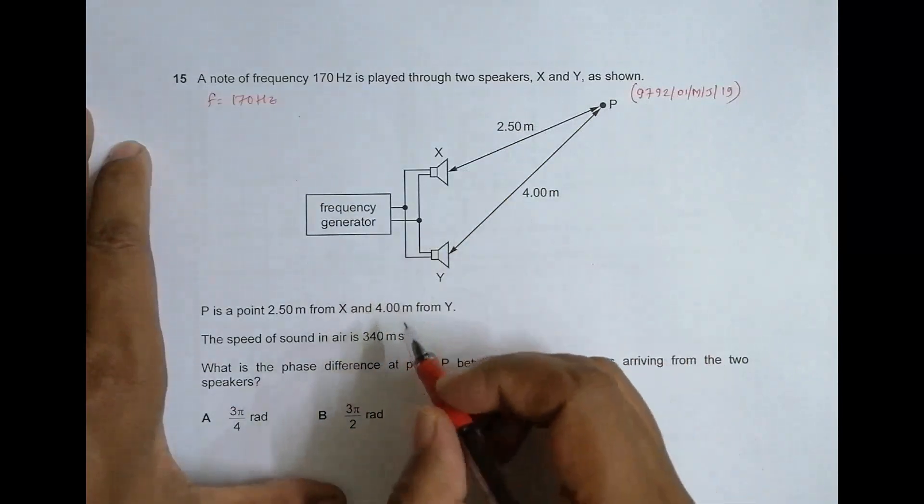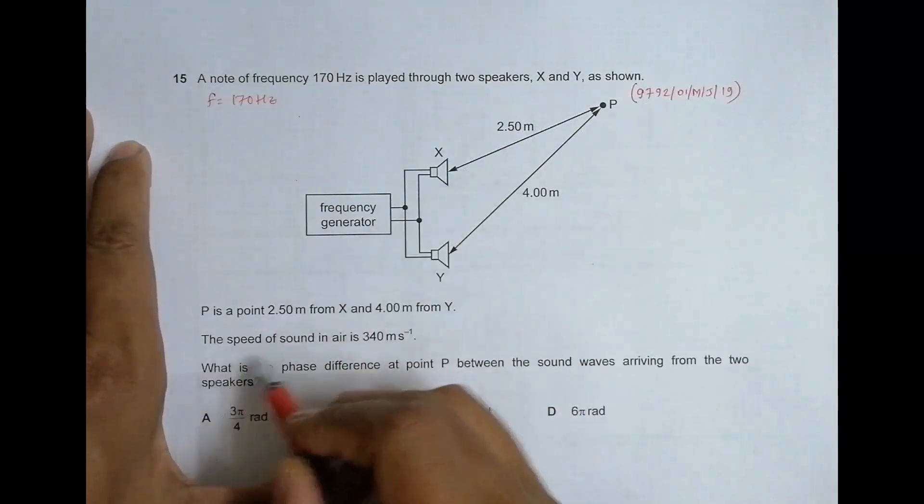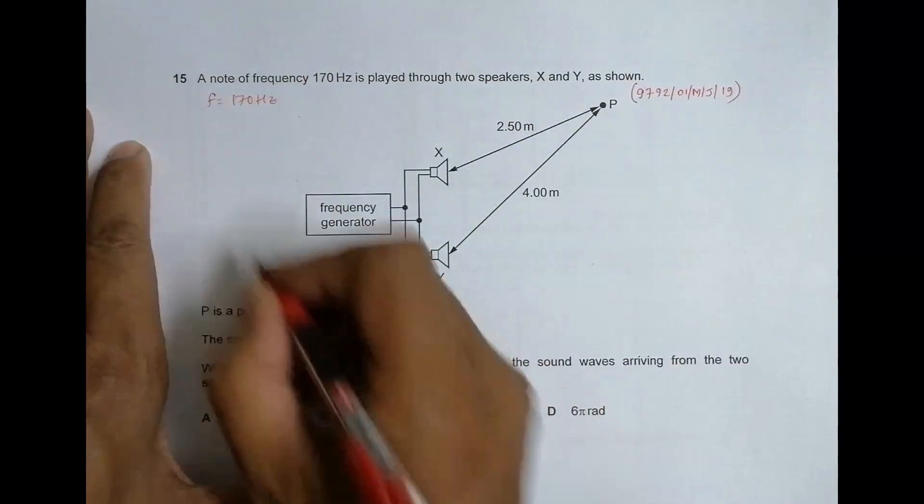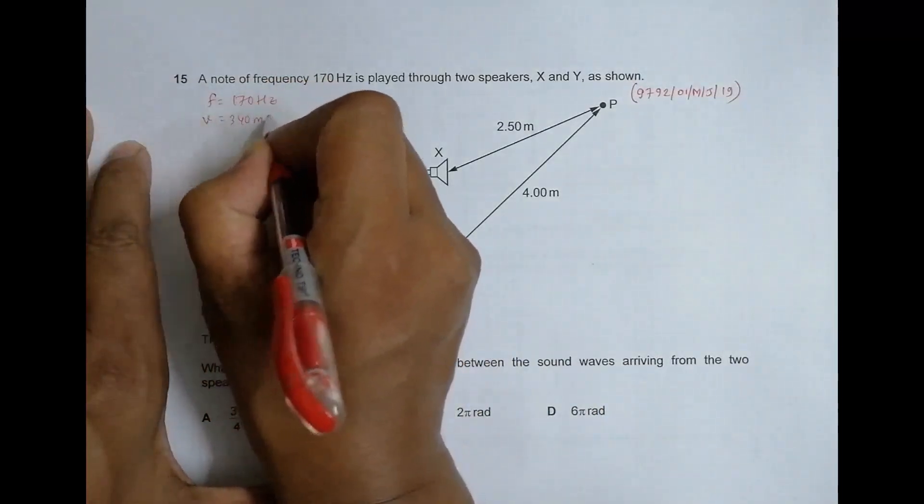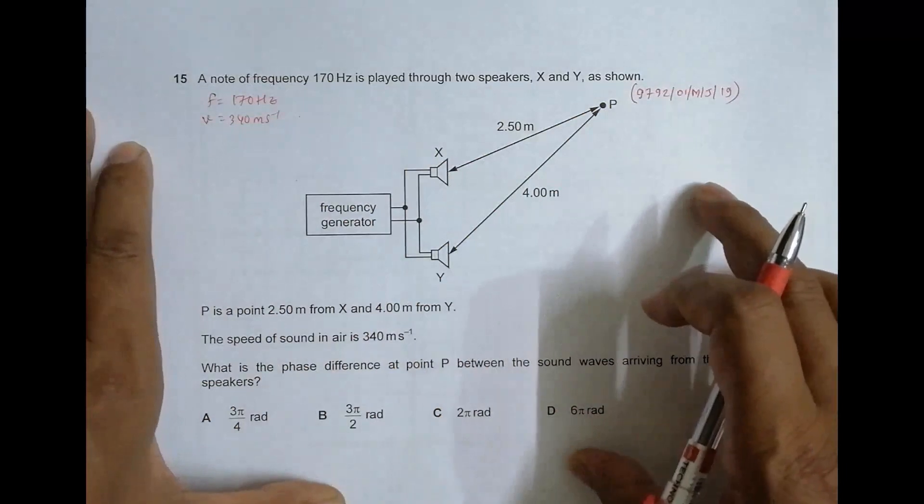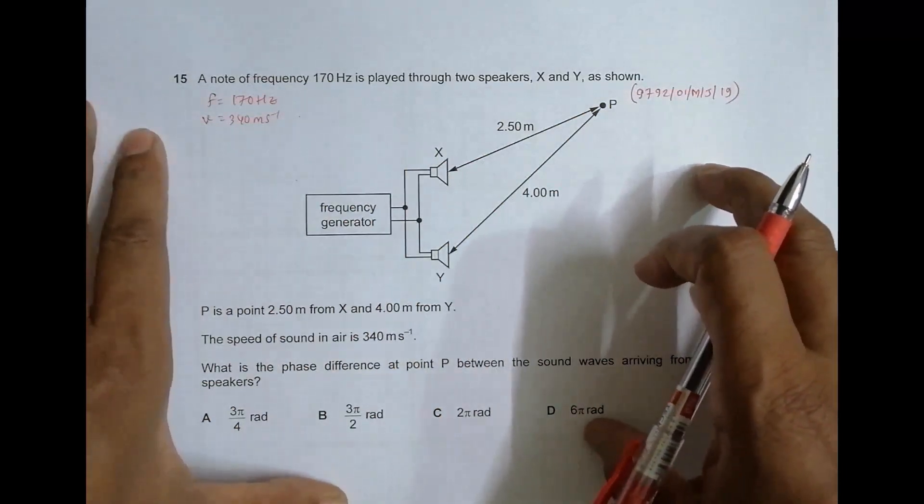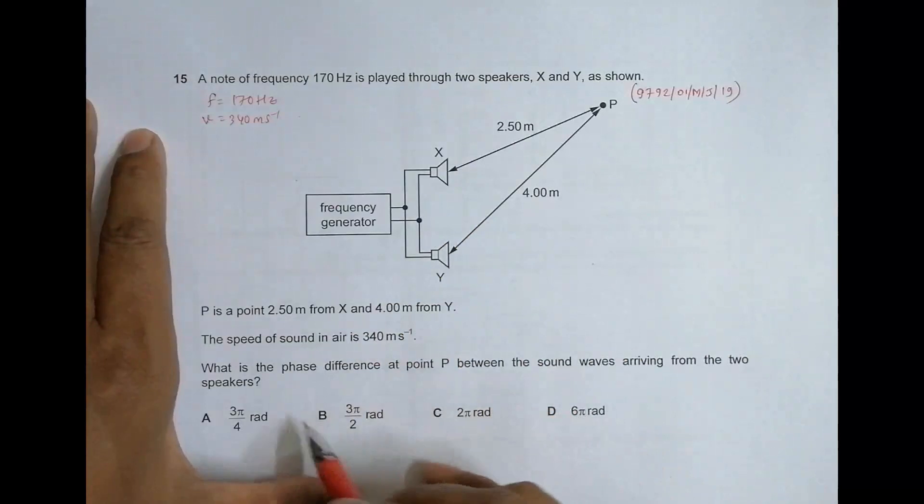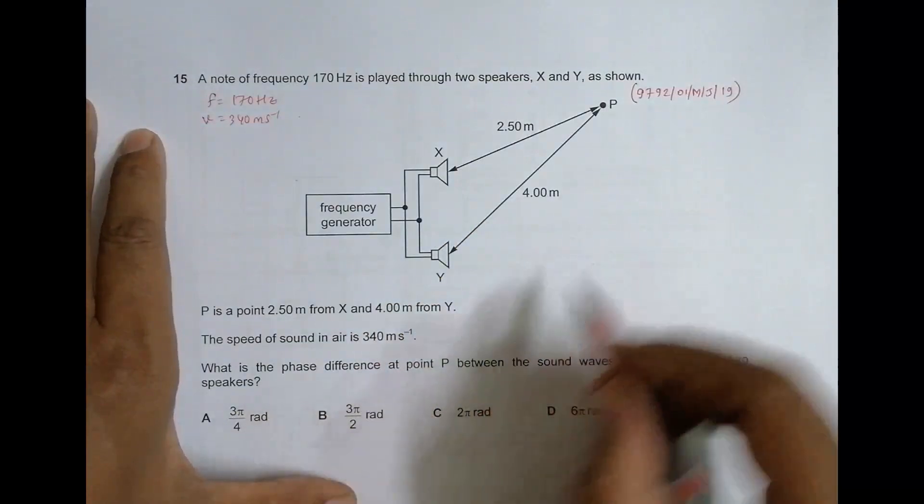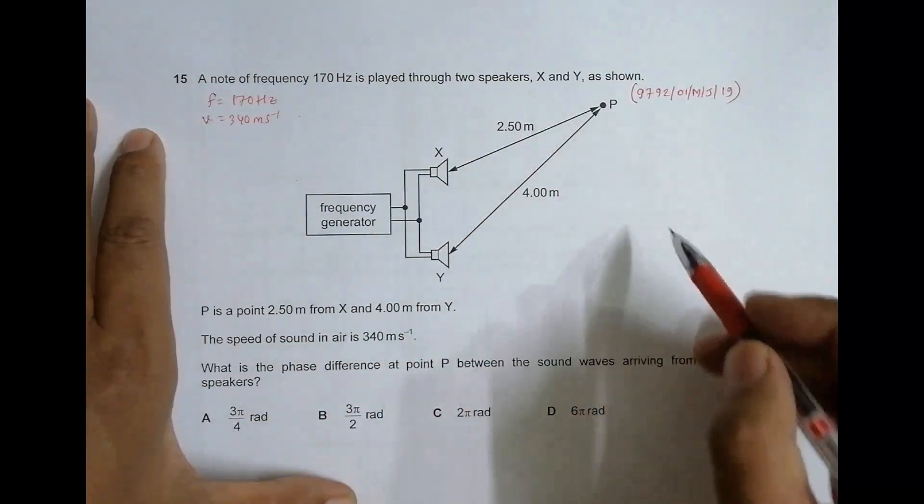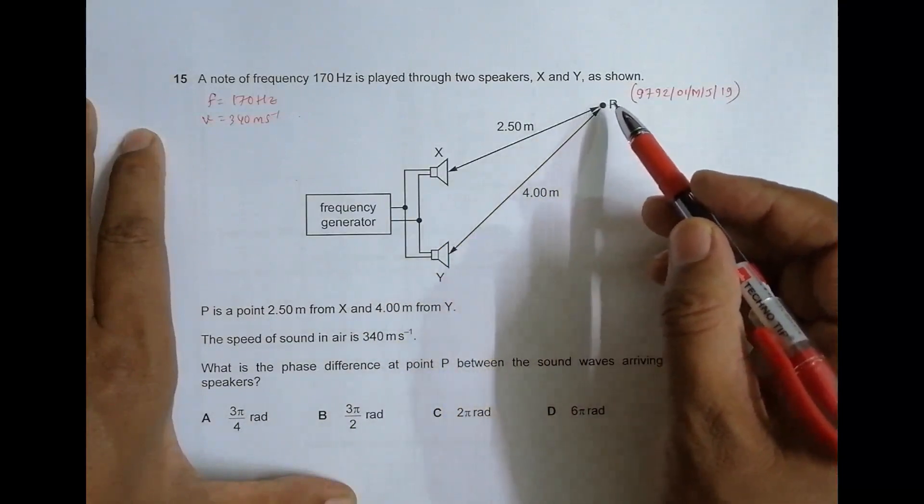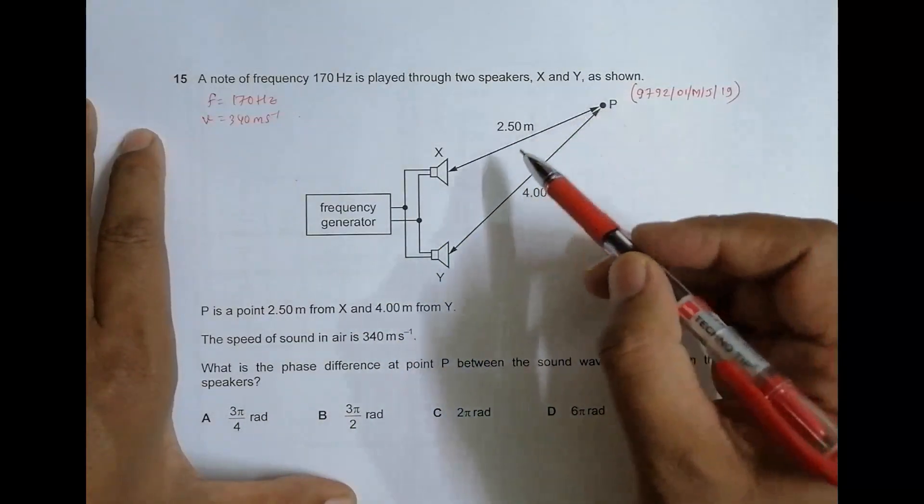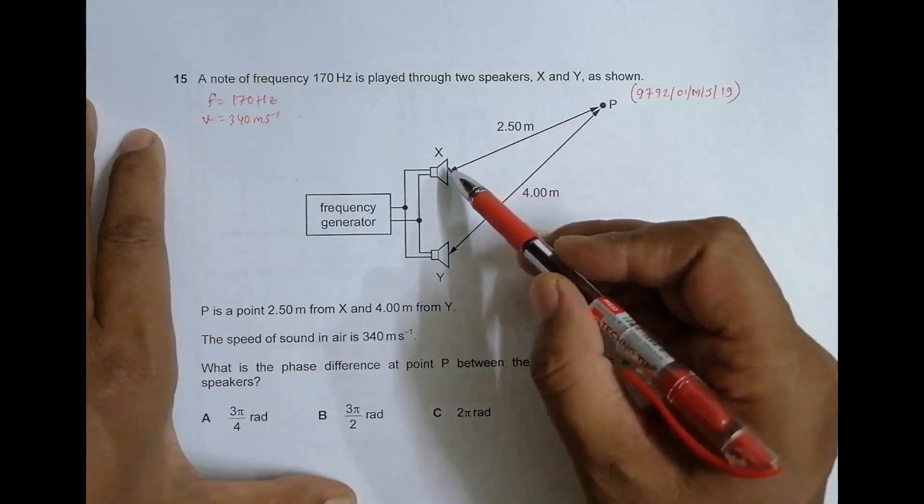The speed of sound in air is 340 meters per second. These data are given so that we can find the wavelength of the wave produced by the generator. What's the phase difference at point P between the sound waves arriving from the two speakers? So we have to find the phase difference at this point due to the waves arriving from here and here.